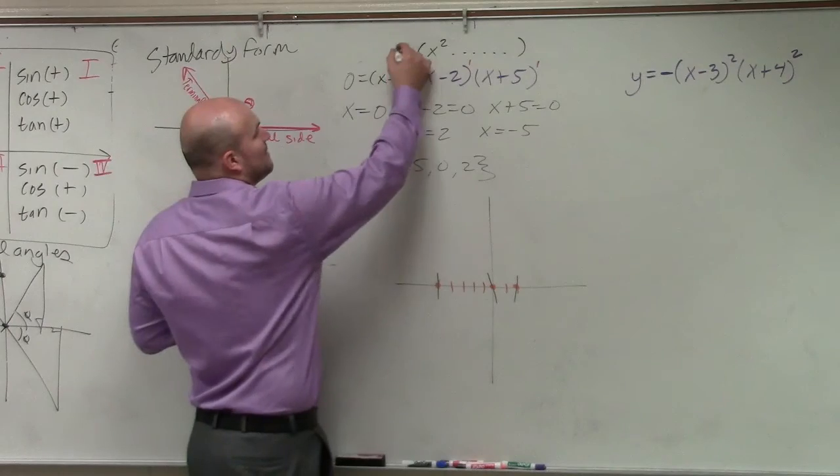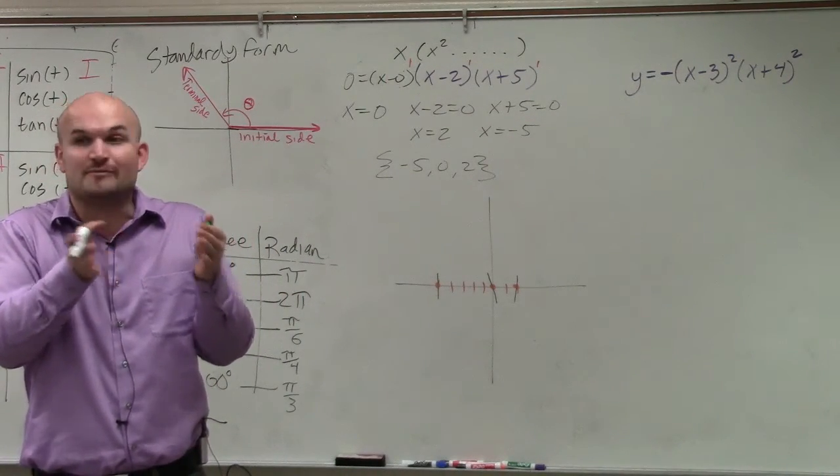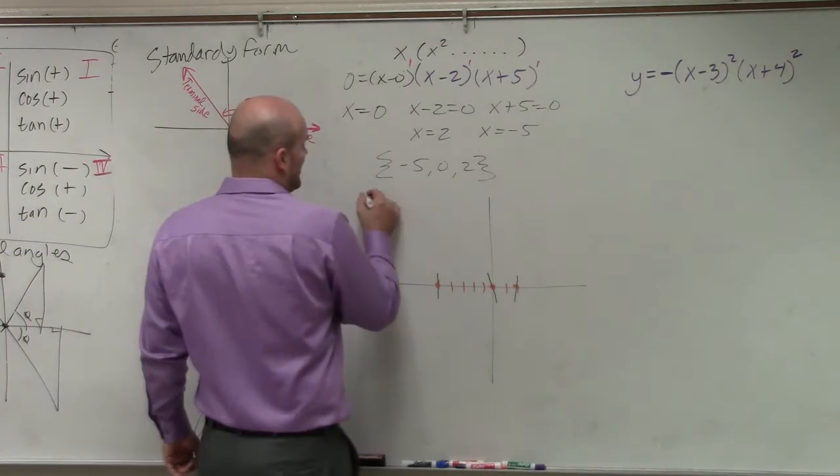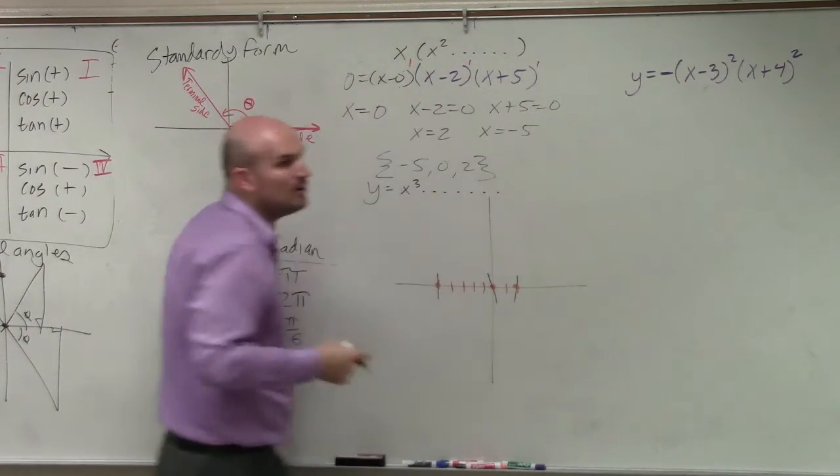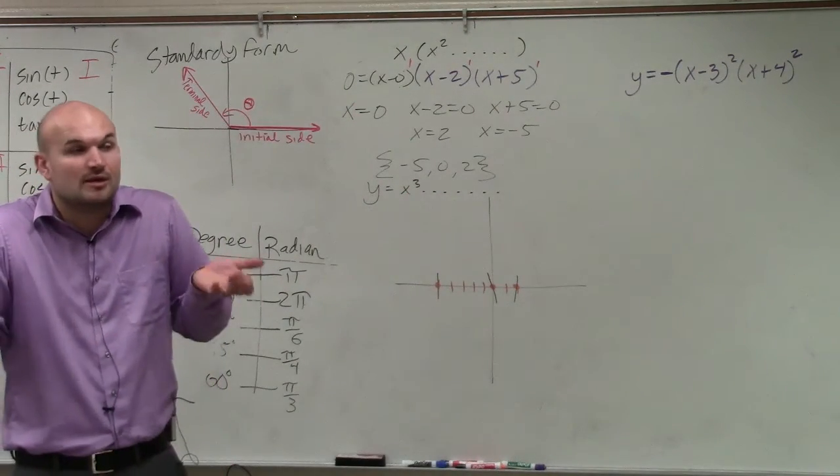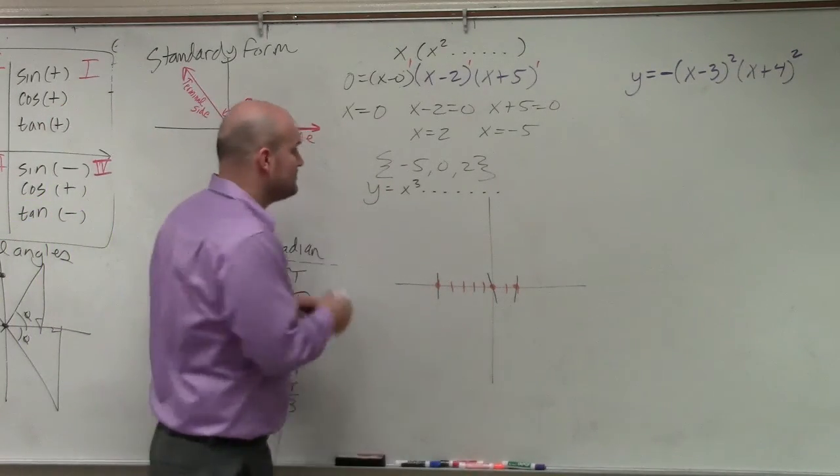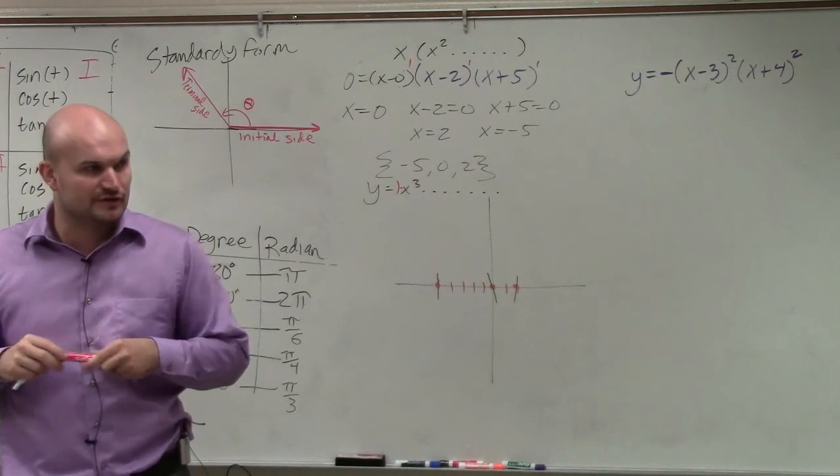Then if you multiply that by x, now my degree has gone from x, or my leading term has gone from x squared to what? x cubed. So in reality, I have this y equals x cubed. Now we don't really care about what the rest of it is, because then we only care about the end behavior. So we need to look at this. If the degree here is 1 and the leading coefficient here, I'm sorry, the degree is 3 and the leading coefficient is 1.